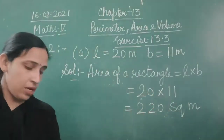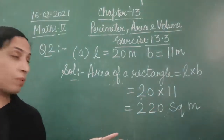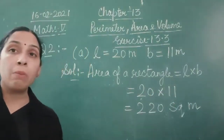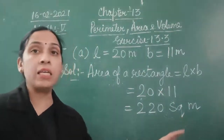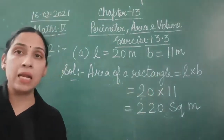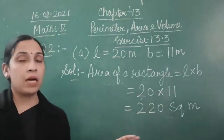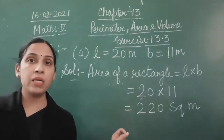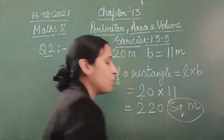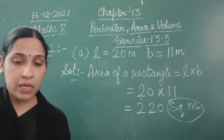Many children skip writing the formula — they know it, so they just do the multiplication. But they forget to write the formula and, importantly, they forget to write the unit. Even when they write 20 m × 11 m, they skip the unit in the final answer. So remember: area of a rectangle = L × B; put the values 20 × 11 = 220 square metres. The unit is very important.